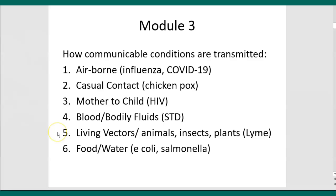Others require living vectors like animals, insects, and plants. You'll remember when we talked about the historical Justinian's Plague and the Black Plague — those required the intersection of humans, fleas, and rats. Lyme disease also, if you think about deer ticks and deer, is one of these examples of a communicable condition requiring living vectors. The sixth way these can be communicated is through water and food — examples include E. coli or salmonella.